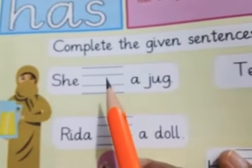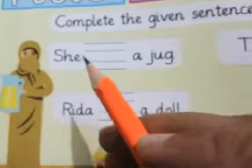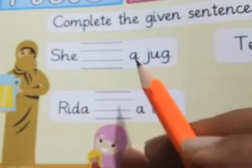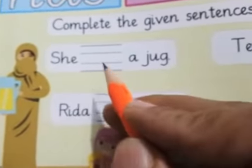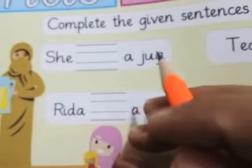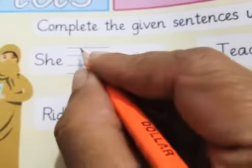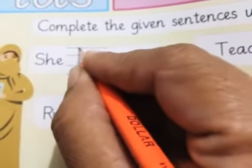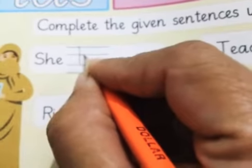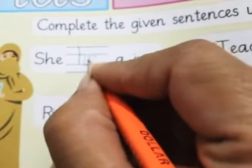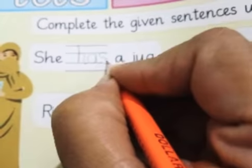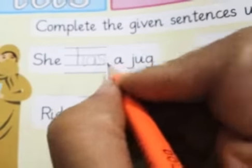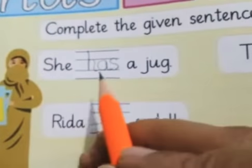We have to write has. She dash a jug — so we will write: She has a jug. H-A-S. She has a jug.